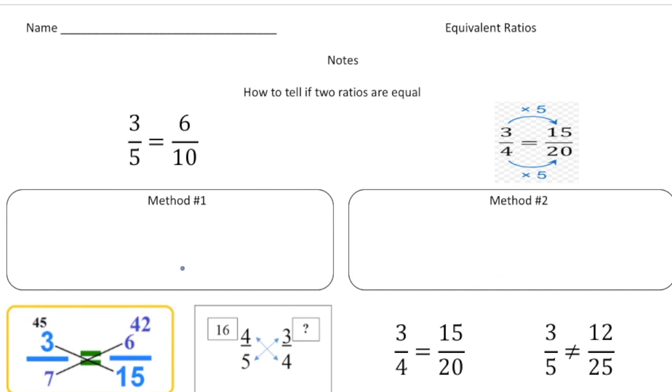So method number one is if the cross products are the same. Let's write that down. Cross products are equal. And let me show you what I mean by that. So if I multiply three times ten, well, three times ten is thirty. And if I multiply six times five, that's also thirty. When the cross products are the same, that's a characteristic of equal fractions. So if these numbers were not the same, that means the fractions would not be equal.